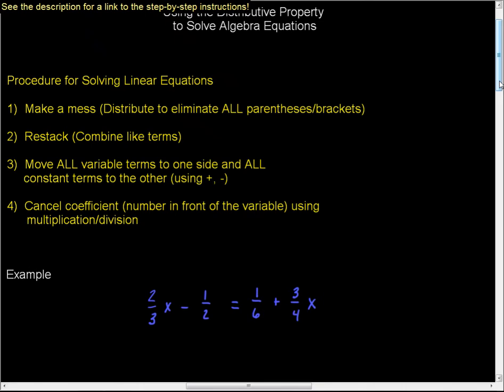Now, not all four of these procedures will you have to follow. For instance, in this one there are no parentheses or brackets to get rid of, so we just take a look at number two. Number two says combine like terms, and we're just going to do that on each side. Well, that's already done. So really step three is to move all variable terms to one side and all constant terms to the other, and we use addition and subtraction to do that.